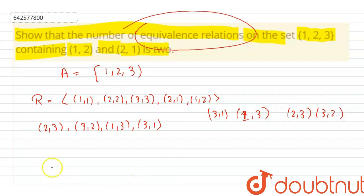Now we will take another R by writing all the subsets: (1, 1), (2, 2), (3, 3), (2, 1), (1, 2). Now adding these: (3, 1), (1, 3), (2, 3), and (3, 2). Now this R₁ is a universal subset.